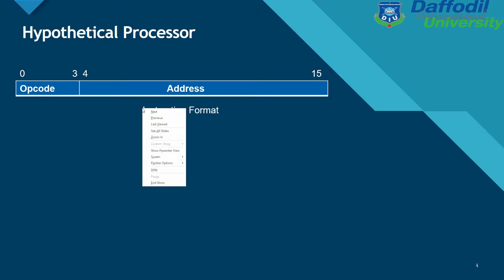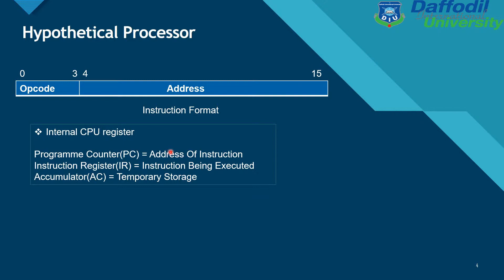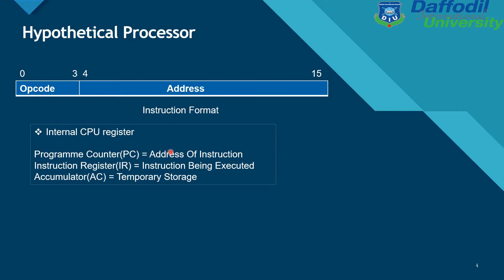The second step covers the internal CPU registers. The Program Counter, represented as PC, holds the address of the instruction. The Instruction Register represents the instruction being executed. The Accumulator represents temporary storage.